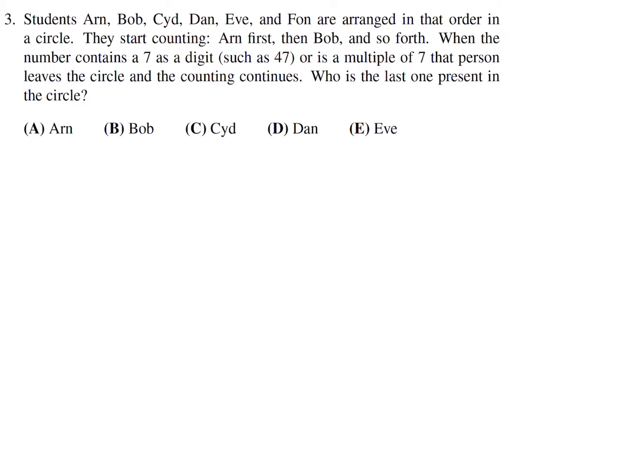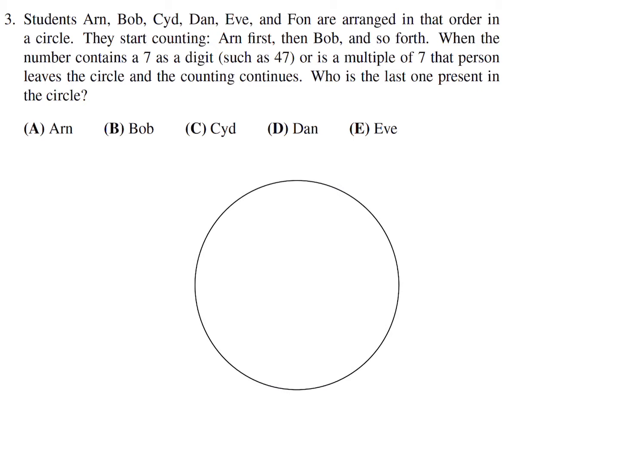Students Arne, Bob, Sid, Den, Eve, and Fawn are arranged in that order in a circle. They start counting — first Arne, then Bob, and so forth. When the number contains a 7 as a digit, such as 47, or is a multiple of 7, that person leaves the circle and counting continues. Who is the last one present in the circle? Let's draw a circle and draw in our friends A, B, C, D, E, and F.